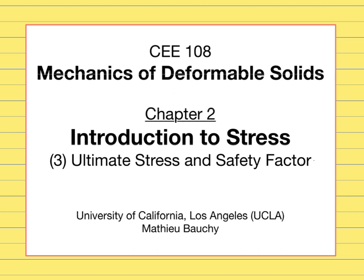Now we are going to talk about how, when we know the stress, we determine whether this material is going to break or not. As a reminder, to define if a given member is going to break, the first thing that matters is the load. If there is no load the material won't break; if the load increases there is a higher chance the member will break. The second thing that matters is the geometry, especially the area of the cross-section over which the load is applied. If you have a very thin material it's more likely to break than a thick one, since a larger surface transmits the load over a larger area. The stress — load per unit of surface — captures both the effect of the load and the geometry of the member.